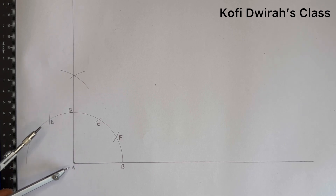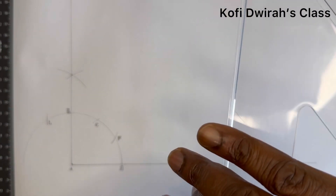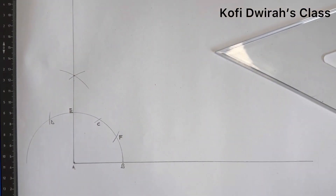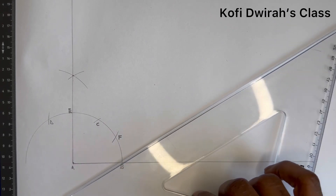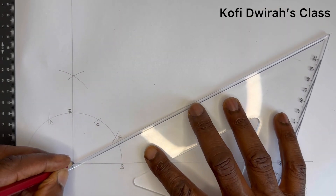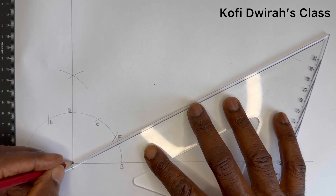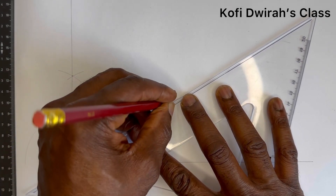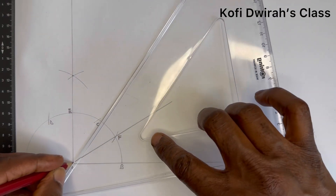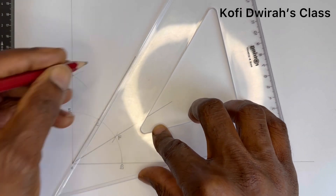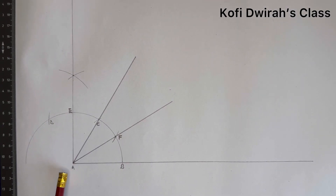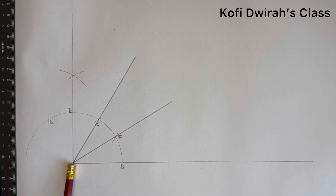After getting point F, with your set square or ruler, draw a straight line from point A through F. Then draw another line from point A through point C. So you draw a straight line from point A through F and another line from point A through point C.